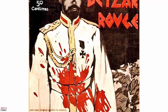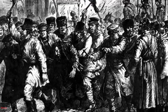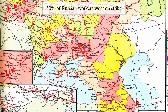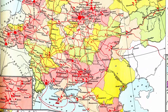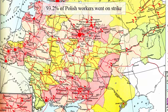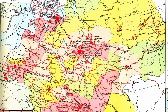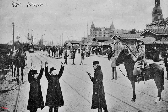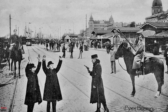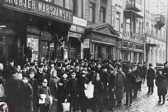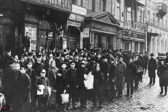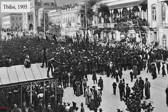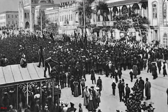The news of the massacre spread around the country, prompting further strikes in other areas of the empire. Half of European Russia's industrial workers went on strike in 1905, and 93.2% in Poland. There were also strikes in Finland and the Baltic coast. In Riga, 130 protesters were killed on the 26th of January, and in Warsaw, a few days later, over 100 strikers were shot on the streets. By February, there were strikes in the Caucasus, and by April in the Urals and beyond.